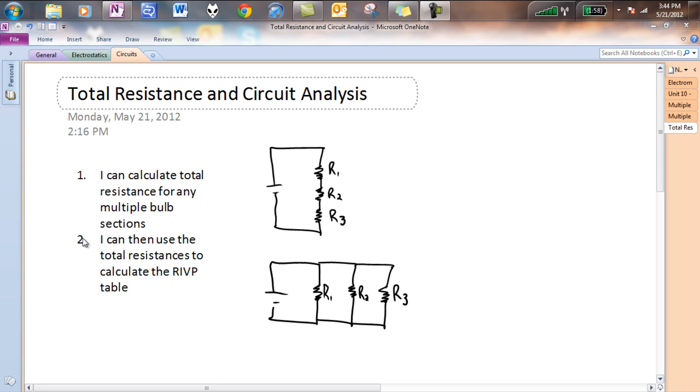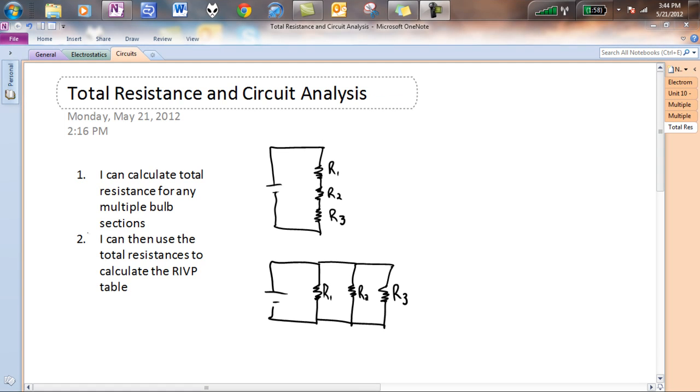I'm hoping to do this pretty quick. It is a pretty easy concept, at least understanding the totals. And I think the example problem, you can take a look at part number two here. I can use the total resistance to calculate RIVP, just as for resistance, current voltage and power of every single resistor in a circuit. You're going to see that we're going to finally be able to quantify everything in these circuits.